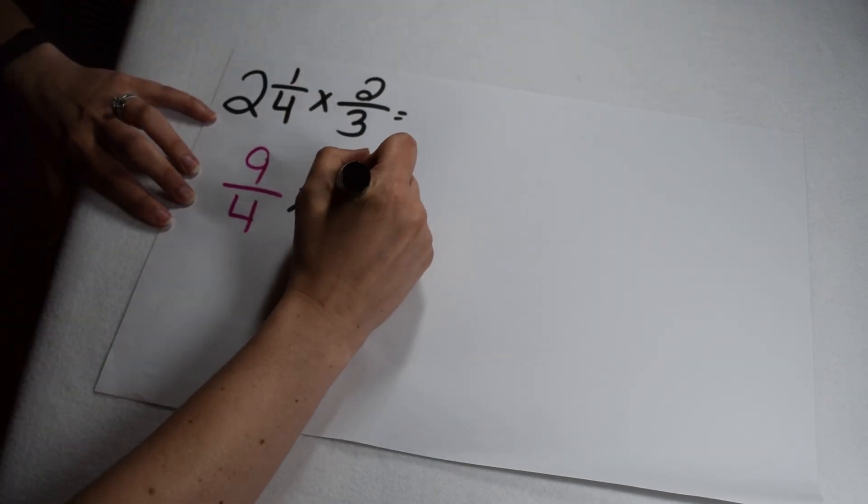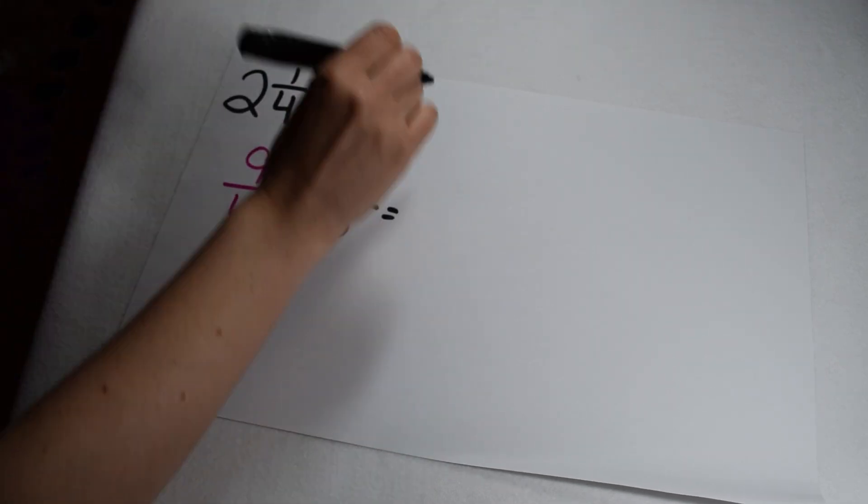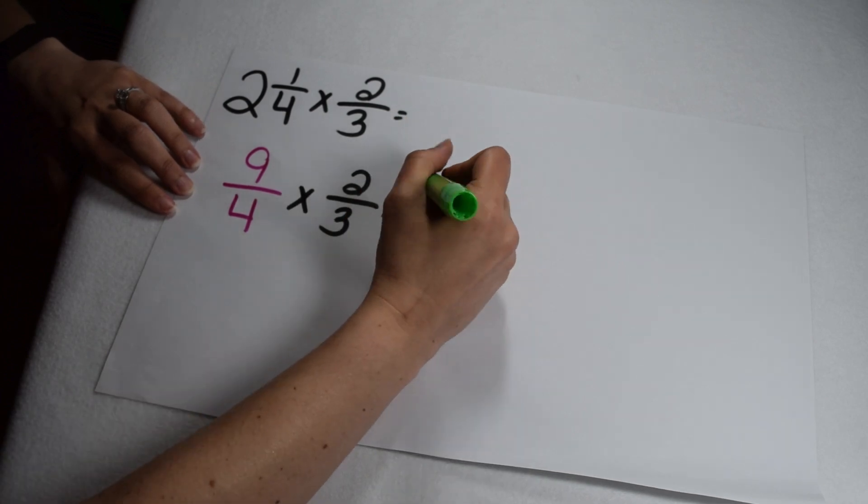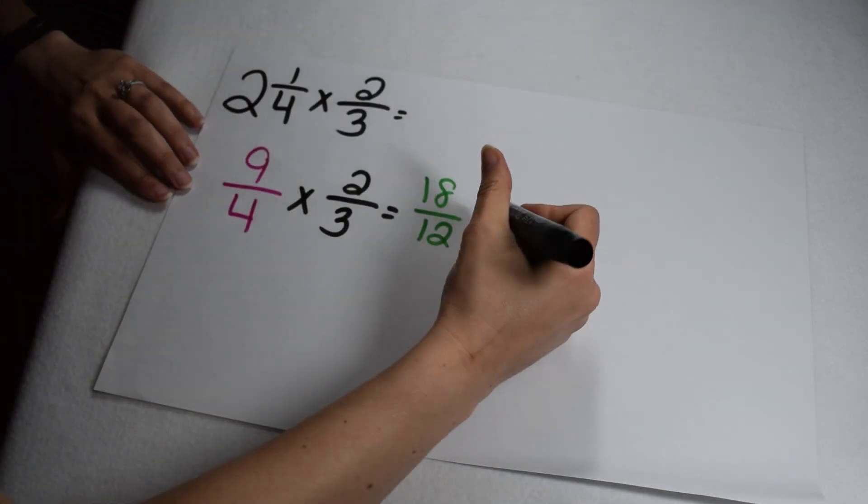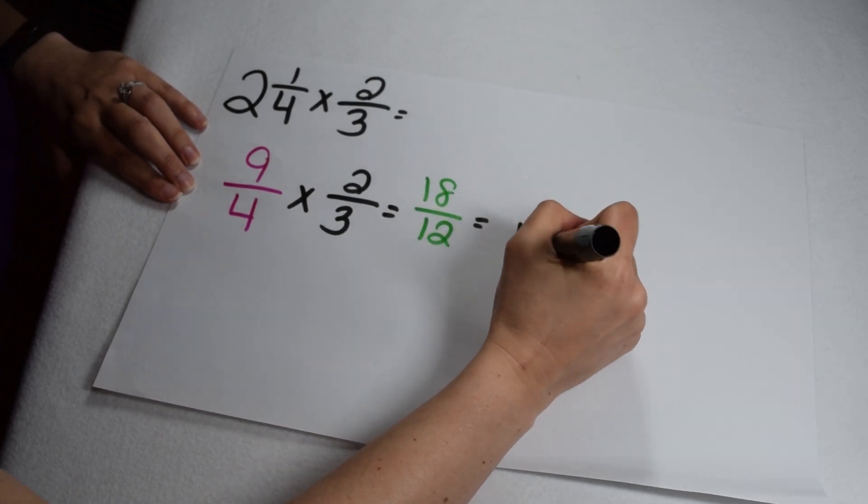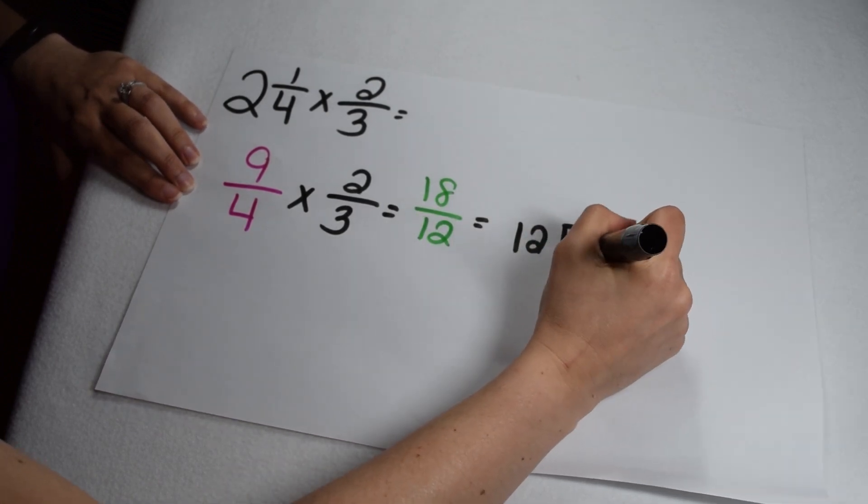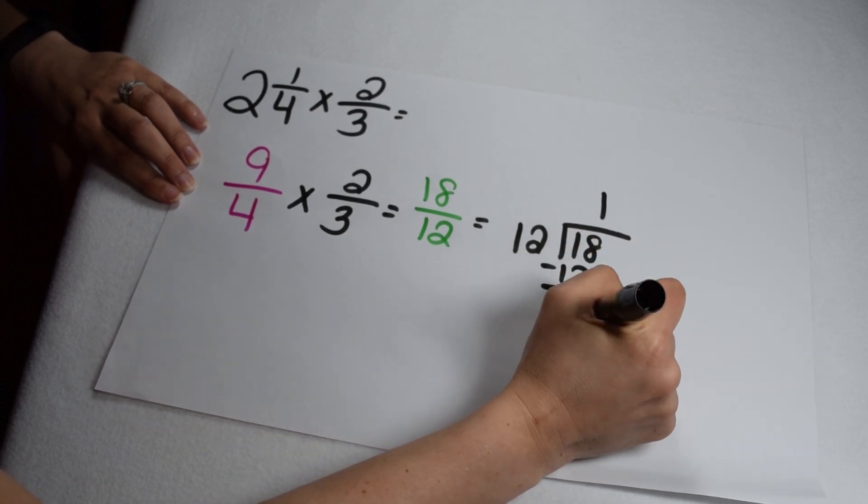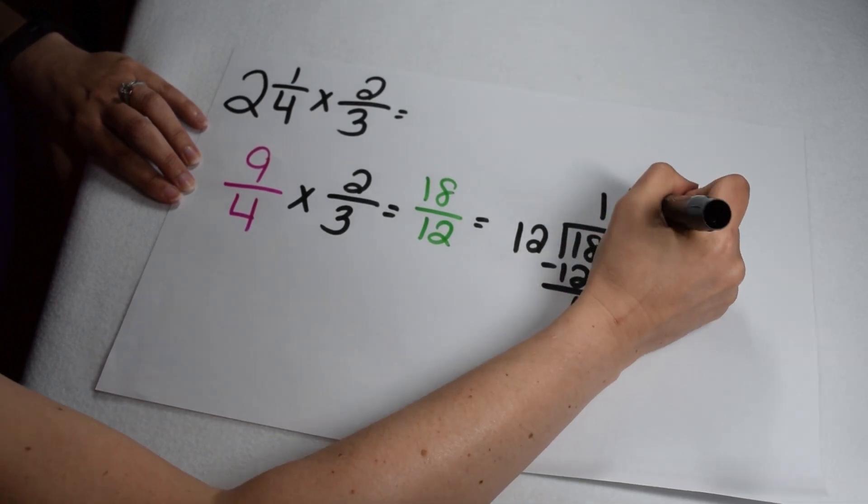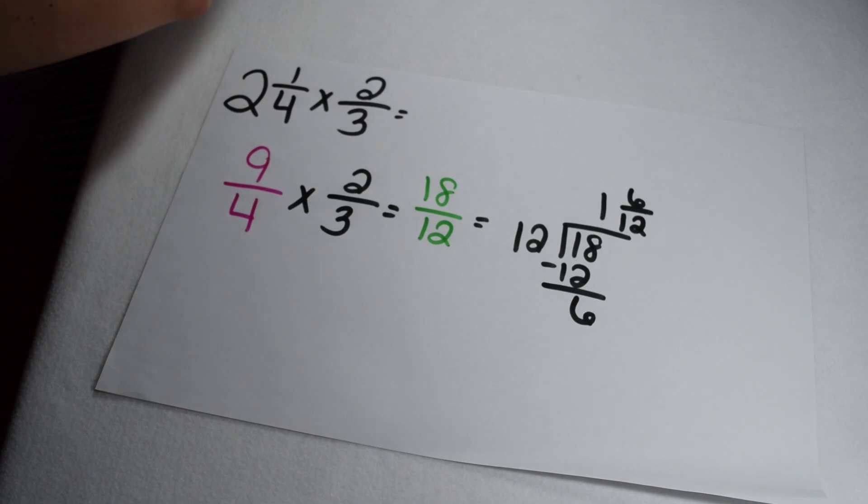Now I can take that nine-fourths and multiply it by my two-thirds. Nine times two gives me 18, four times three gives me 12. 18 twelfths is an improper fraction which I'm going to turn into a mixed number by dividing the numerator by the denominator. 12 goes into 18 once with six left over. So that six becomes my numerator and my denominator of 12 stays the same.